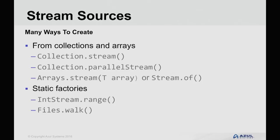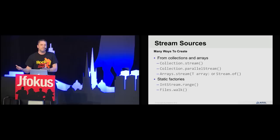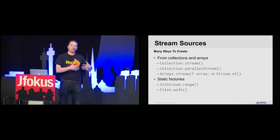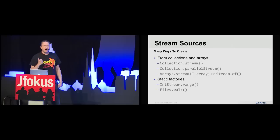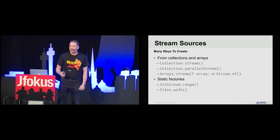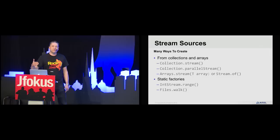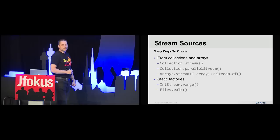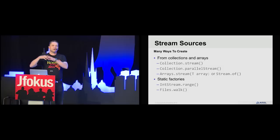There are a number of ways to get stream sources. There's the stream method on Collection, or parallelStream which uses the fork-join framework. For arrays, you can use Arrays.stream or Stream.of. There are also useful static factories like IntStream.range and Files.walk, which lets you stream directories and files from a given point in your file system.